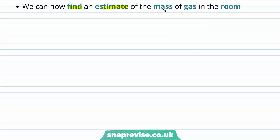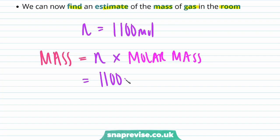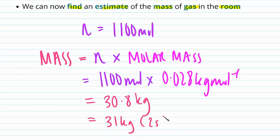Now we can estimate the mass of gas in the room. We know n = 1100 moles, and mass equals n times the molar mass of the substance. Substituting in: mass = 1100 mol × 0.028 kg/mol = 30.8 kg, which is 31 kilograms to two significant figures.